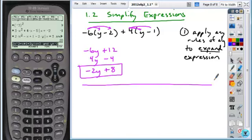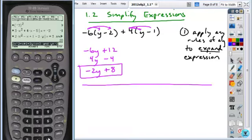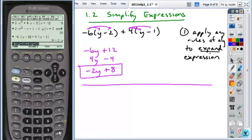If we're looking at this expression, we have negative 6 times the quantity y minus 2. I'm just going to copy it exactly as it appears. Plus 4 times the quantity y minus 1. And when it closes off, I'm going to hit enter, and it gives me my answer 8 minus 2y.